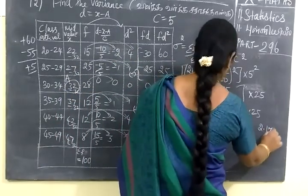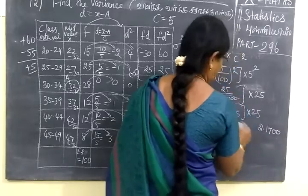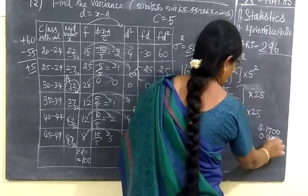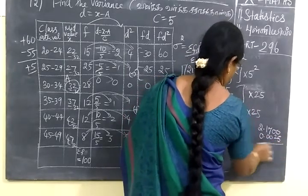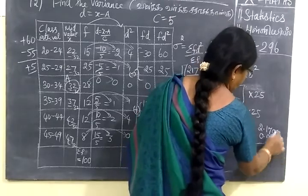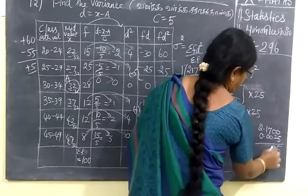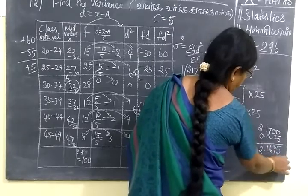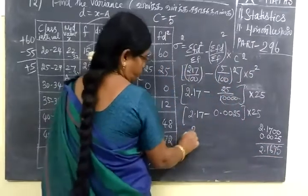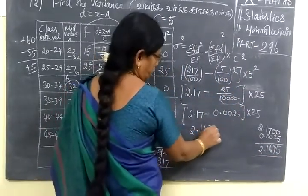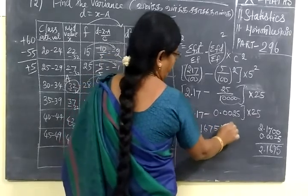Now you subtract 2.17, so you can subtract it. 0, 0, 2, 5, 10 minus 5 is 5, 9 minus 2 is 7, then 6, 1, 2. So 2.1675.